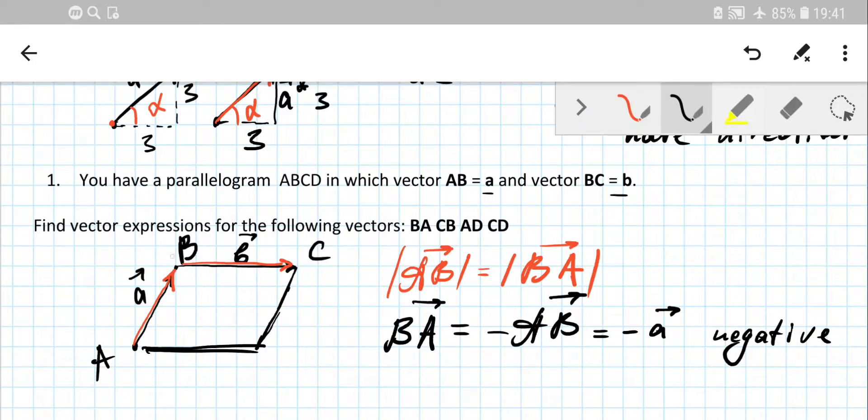So next, CB. CB has the same magnitude as BC but it has negative direction, so it's negative B.